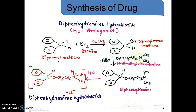By treating the 2-dimethylaminoethanol with diphenylbromomethane, a dehalogenation takes place — that is, removal of HCl — and we get diphenhydramine. This is further treated with dilute hydrochloric acid, which gives formation of diphenhydramine hydrochloride.